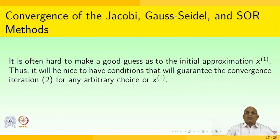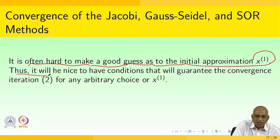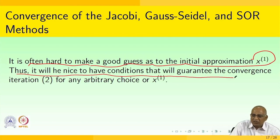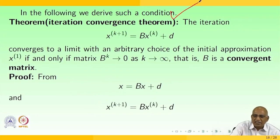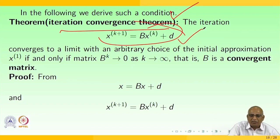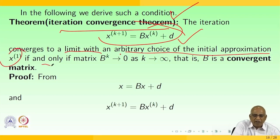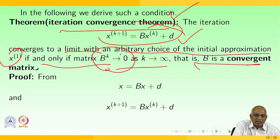Now, convergence of the Jacobi, Gauss-Seidel, and SOR techniques. It is often hard to make a good guess as to the initial approximation x^(1). Thus it is nice to have conditions that guarantee convergence for an arbitrary choice. The Iteration Convergence Theorem states: x^(k+1) = Bx^(k) + d converges to a limit with an arbitrary choice of x^(1) if and only if B^k → 0 as k → ∞, that is, B is a convergent matrix.